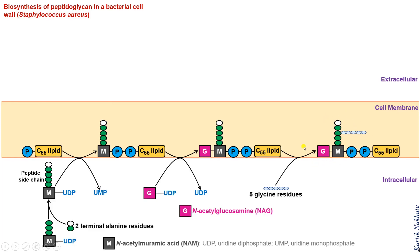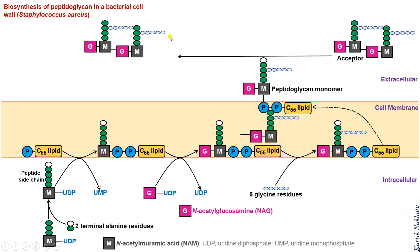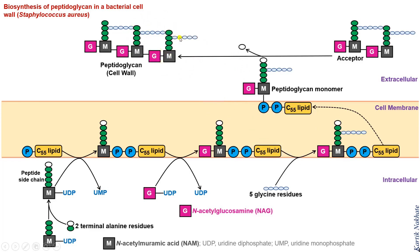Here, the building block is ready for cell wall synthesis. This building block is transported to the outside of the cell membrane by the C55 lipid carrier and added to the growing end of the peptidoglycan — that is, the acceptor. Thereafter, in the peptidoglycan layer, the cross-linking between the peptide side chains of N-acetyl muramic acid and N-acetyl glucosamine occurs. The hydrolytic removal of the terminal alanine provides the requisite energy during this process.